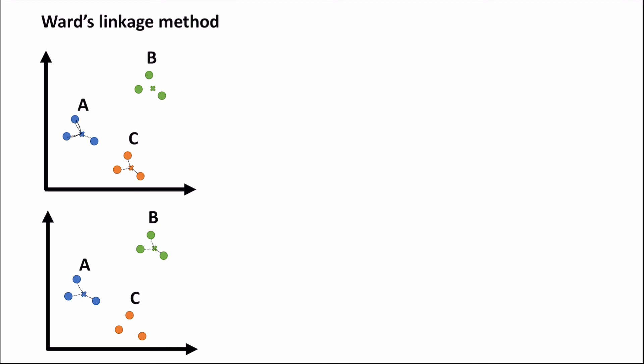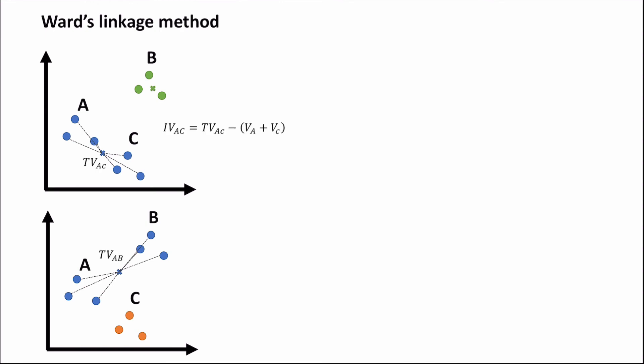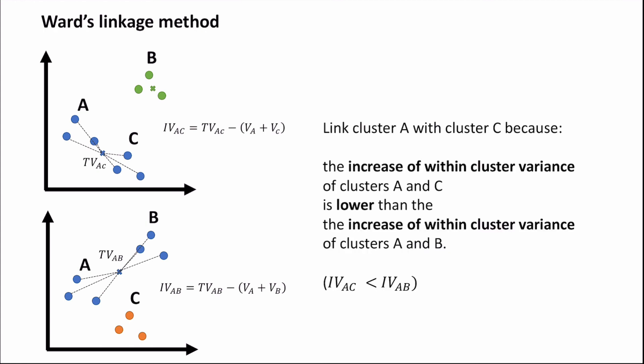A more complicated linkage method is called Ward's linkage. The idea is to measure the within-cluster variance of each cluster, where variance is measured as a sum of squared distances each point is away from its centroid. We denote the variance of cluster A as VA, cluster C as VC, and cluster B as VB. We then look at what the variance will be if we link clusters together: total variance AC and total variance AB. The increase in variance for AC (IVAC) equals the total variance of AC minus the sum of VA and VC, and similarly for AB. We link cluster A with cluster C because the increase in within-cluster variance for A and C is lower than the increase for A and B.